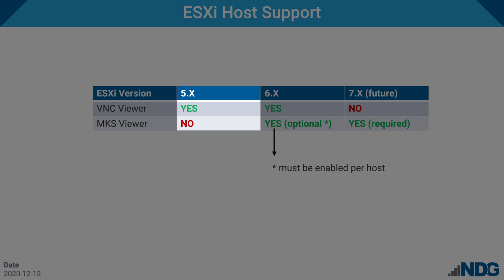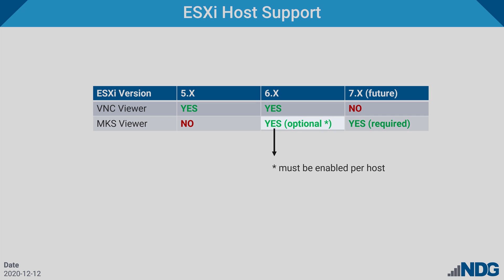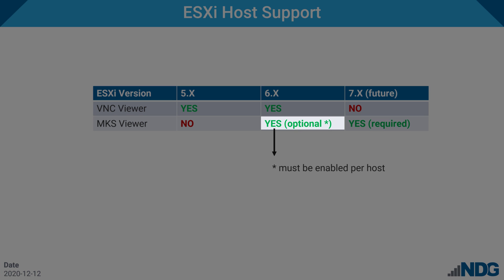Our usage data suggests that most administrators have moved on from ESXi version 5 and are running VMware version 6. However, it's worth noting that the MKS Viewer does not work with version 5 of ESXi and the VNC Viewer will always be used in that case. The MKS Viewer is first supported by VMware ESXi version 6. After you upgrade VE to version 21.1 or higher, NetLab will continue to use the VNC Viewer to maintain backward compatibility. However, if you'd like to get started with the MKS Viewer with your ESX 6 hosts, you'll need to enable that on the VMware host settings within the NetLab administrator interface.